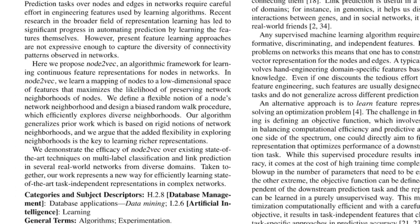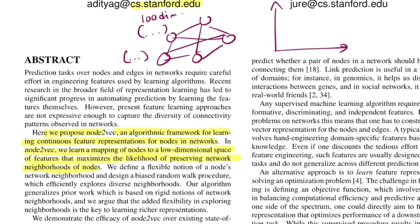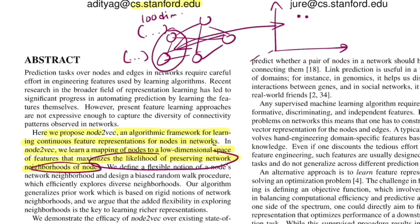We propose Node2Vec, an algorithmic framework for learning continuous feature representations of nodes in a network. In Node2Vec, we learn a mapping of nodes to a low-dimensional space of features that maximizes the likelihood of preserving network neighborhoods of nodes. For example, if you have a network with five nodes, Node2Vec learns a dense representation for every node — say 100 dimensions. When you plot nodes in that space, nodes near each other in the embedding will also be near each other in the actual network structure.